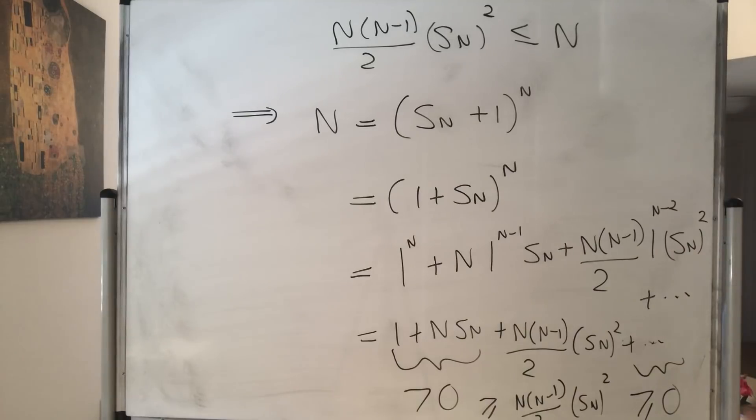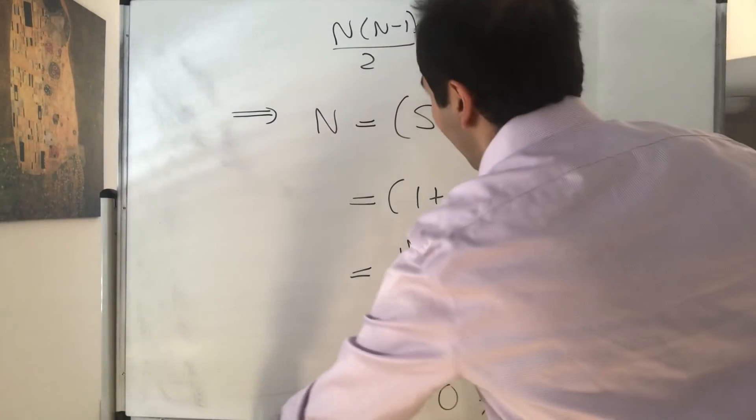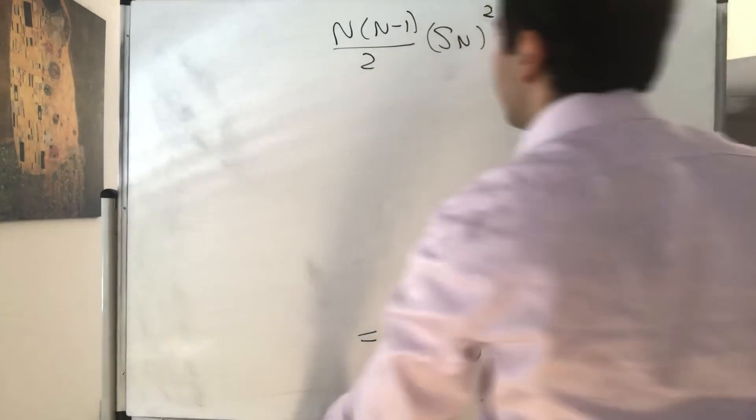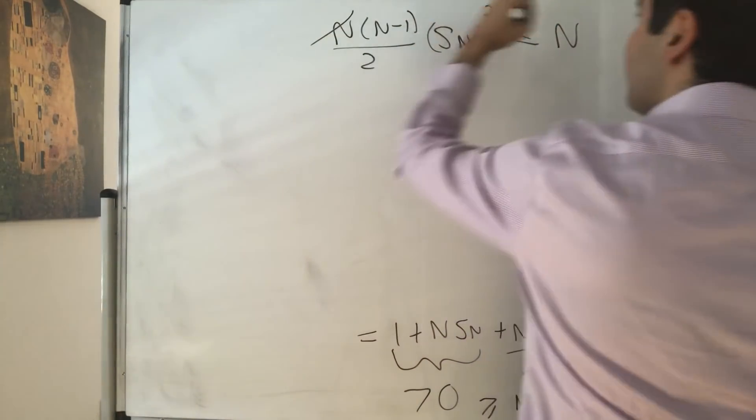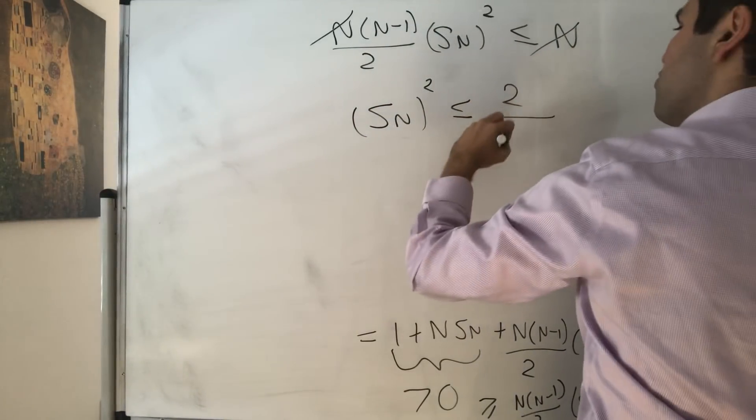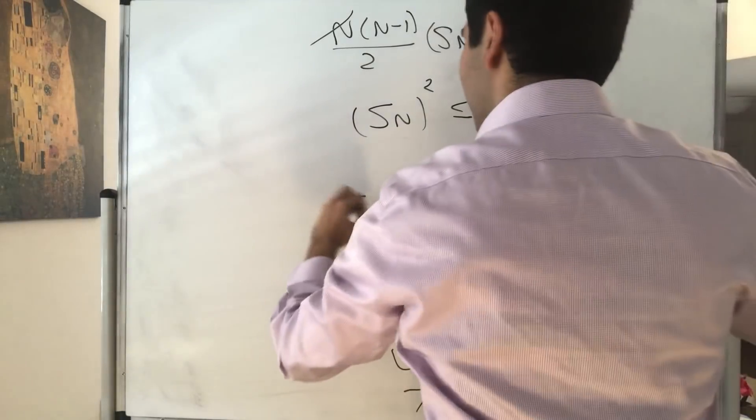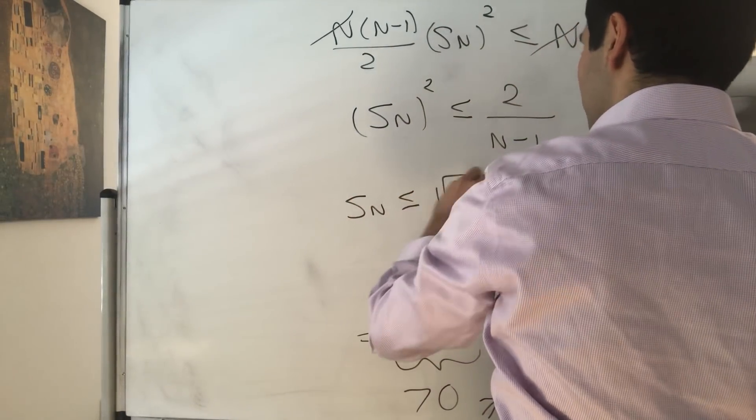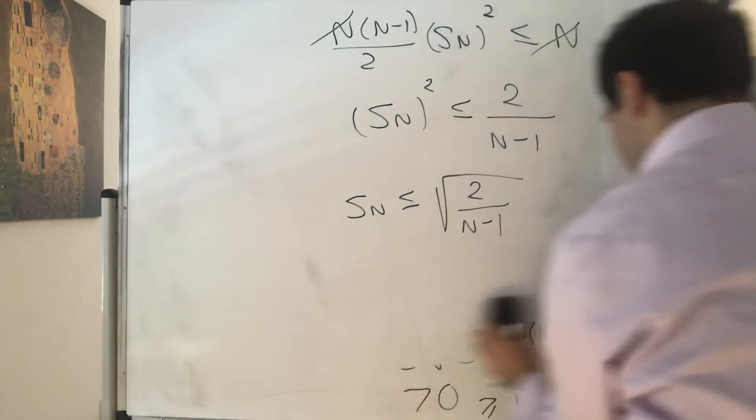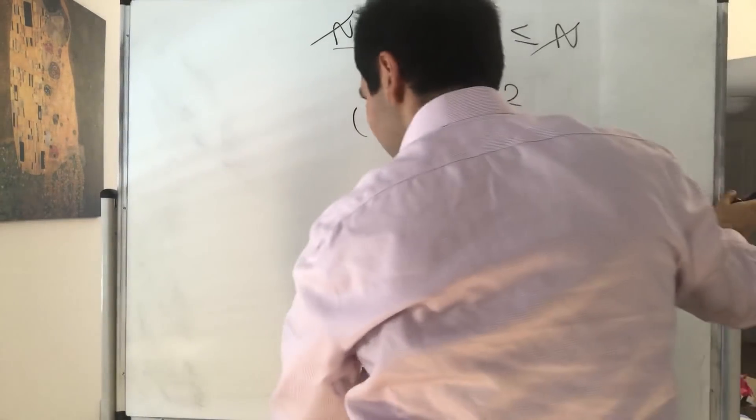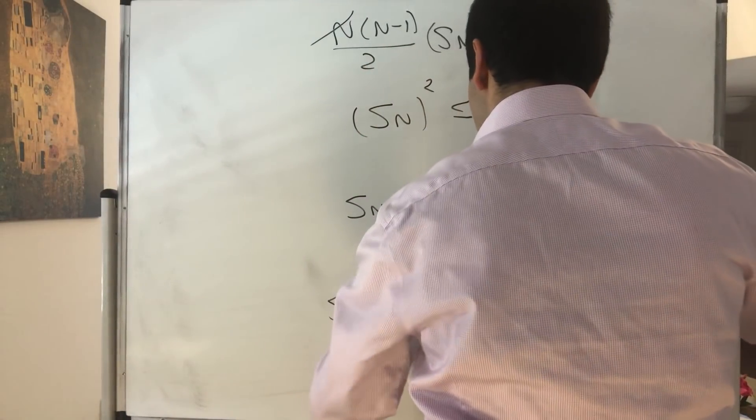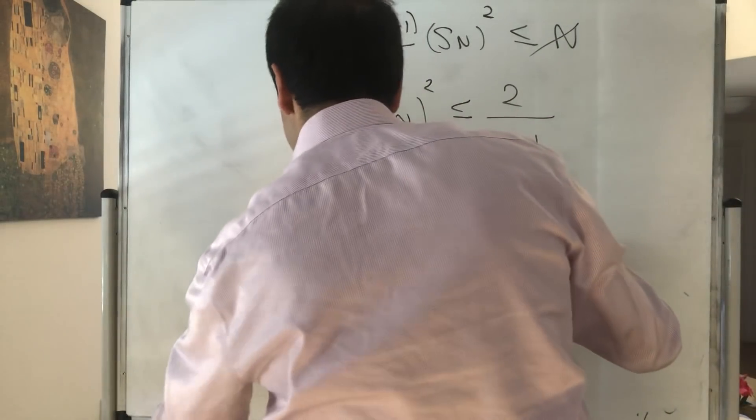And that's good so it turns out this way we can solve for S_n because what do we get? So the n cancels out and then you get S_n squared is less or equal to 2 over n minus 1 and then S_n is less than or equal to square root of 2 over n minus 1. So what do we get? We get that S_n is squeezed between square root of 2 over n minus 1 and 0.